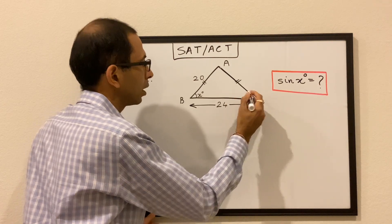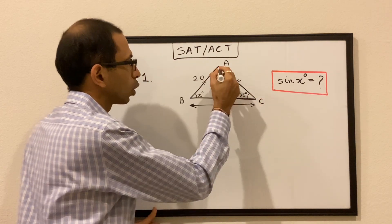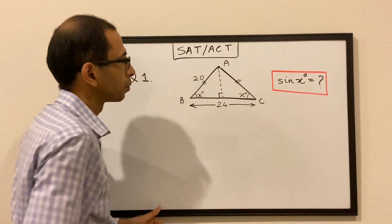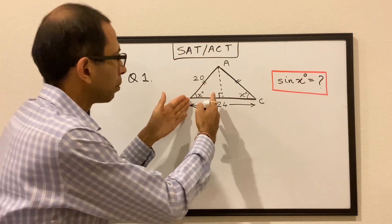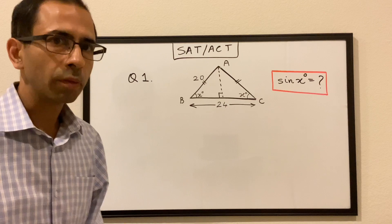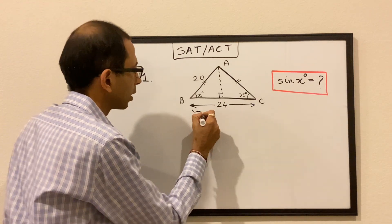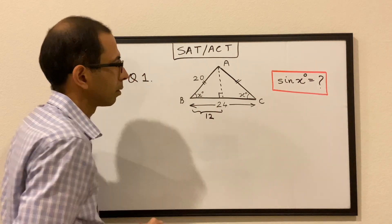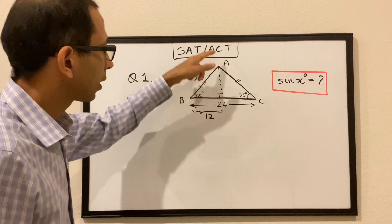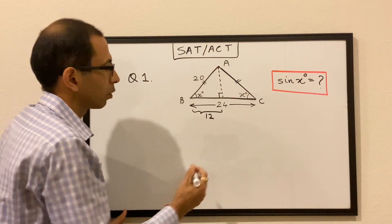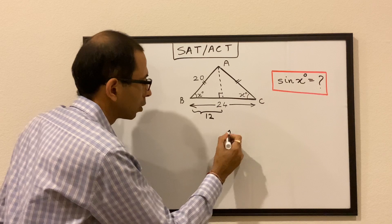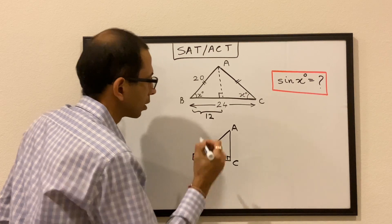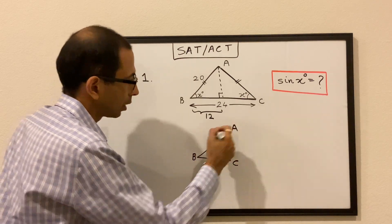Now let's drop a perpendicular from point A to the side BC. When we drop a perpendicular from this point, it bisects this side into two equal parts — that's the property of an isosceles triangle. So this side becomes 12, half of 24. Now if we look at this right angle triangle, we have to find sine of x, so let's concentrate on this triangle. We have angle of 90 degrees, this side is 12, and this side AB is given to be 20.